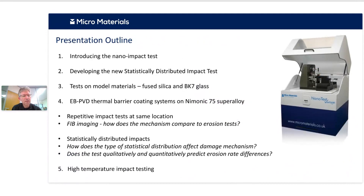In this presentation, I'm going to start by introducing a technique we've called nano-impact testing. We've been doing this for more than 20 years — it's quite a successful test at predicting relative erosive wear performance. Then the thing that's new is this randomized or statistically distributed impact test. I'll introduce that for the first time and show tests on model materials — so-called anomalous and normal glasses, fused silica and BK7 — and show how for materials with relatively similar fracture toughnesses, erosion performance is not correlated with fracture toughness.